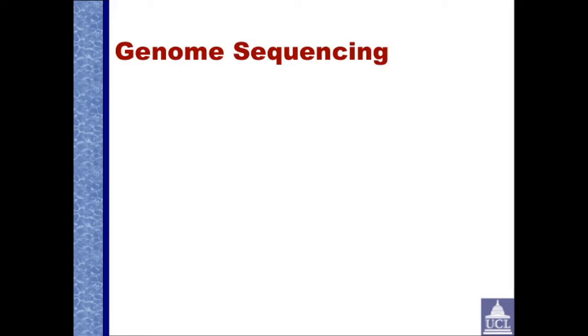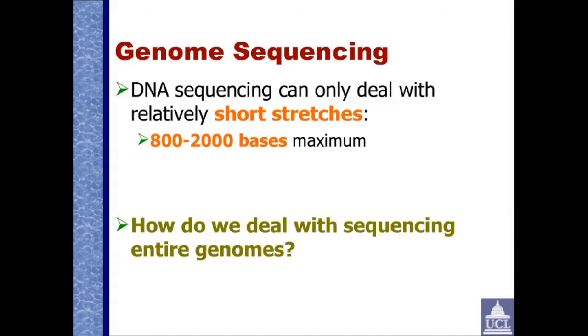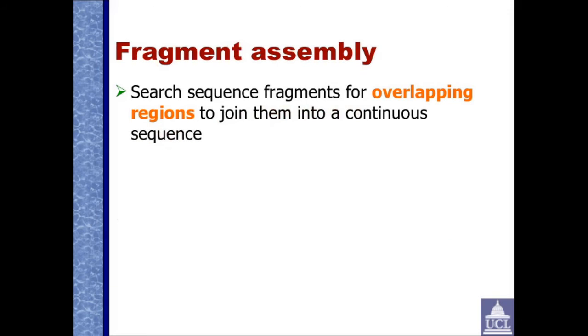Let's take an example of genome sequencing. DNA sequencing can only deal with relatively short stretches of DNA, somewhere between 800 and 2000 bases maximum depending on the method you're using. How do we deal with sequencing entire genomes? We break the DNA into fragments, sequence those, and then look for overlapping regions to join them into a continuous sequence.